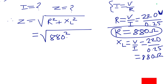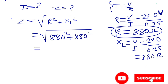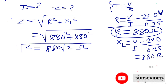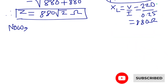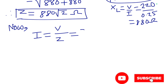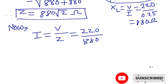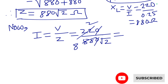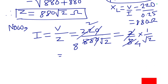Substituting into the impedance formula: Z = √(880² + 880²). Since both terms are the same, 880 comes out of the root and we get Z = 880√2 ohms. Now we calculate the RMS current: I = V/Z = 220 / (880√2). Simplifying: 220/880 = 1/4, so I = 1/(4√2).